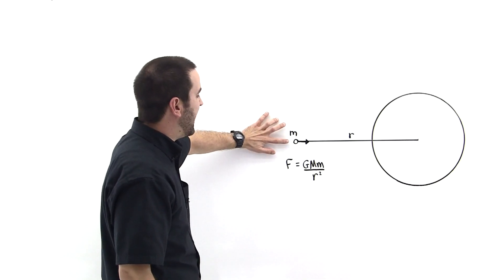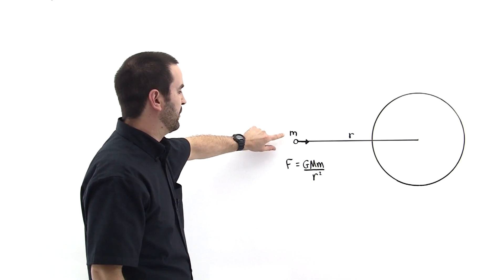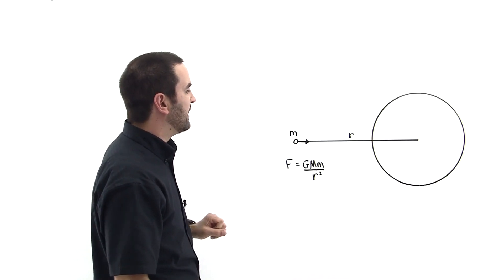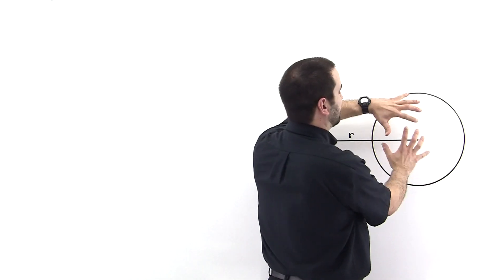It says that if you have a mass out here, a particle out here with mass lowercase m, and you have a shell of mass like so, and the earth and any of the planets can be thought of as a bunch of nested shells one on top of the other.